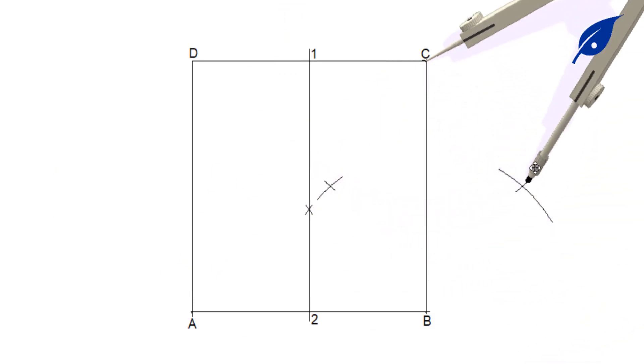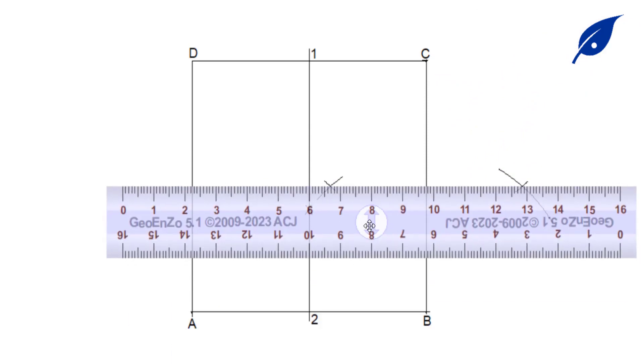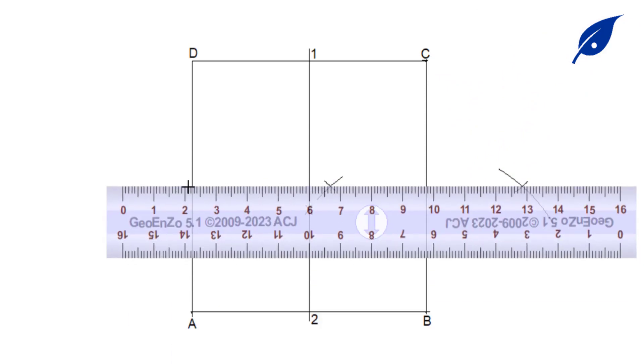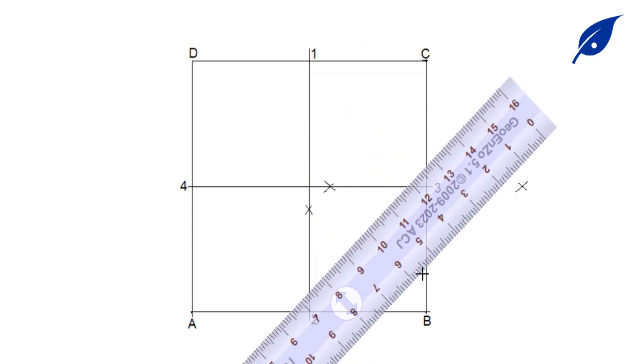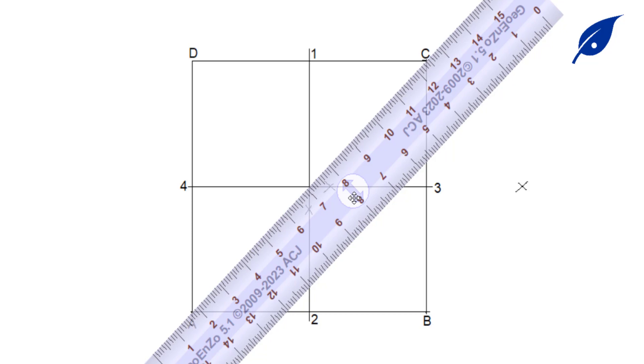Once we bisect AB, we extend the line to side CD. And after bisecting side BC, we extend the line to touch AD. Now we have points 1, 2, 3, and 4, which will be required to fit in our circles.